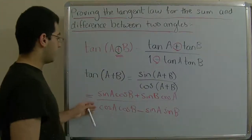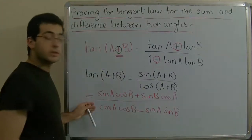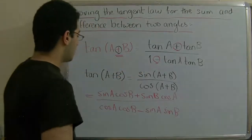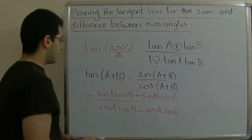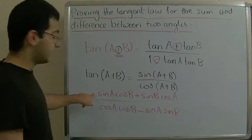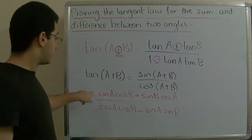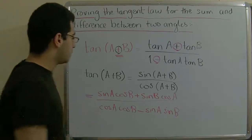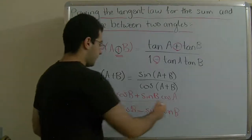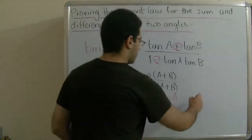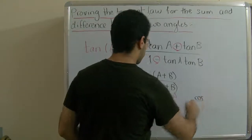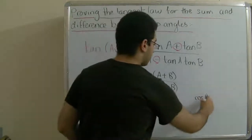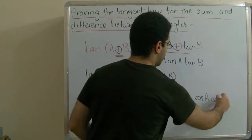We want to simplify this in order to get it in the standard form. What we will do is divide the numerator and the denominator by cosine a times cosine b.